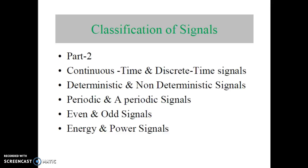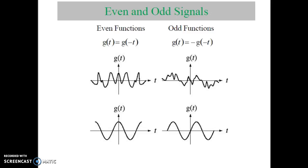Now let us see what are even and odd functions. As shown in the figure, if the function g of t is equal to g of minus t, then the given function is said to be an even function. Or if x of t is equal to x of minus t, and if this condition is satisfied, then the given signal is called an even signal, or it may be called a symmetrical signal.